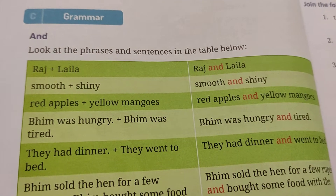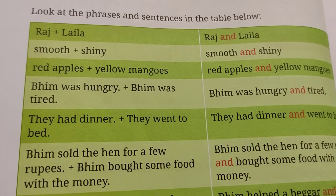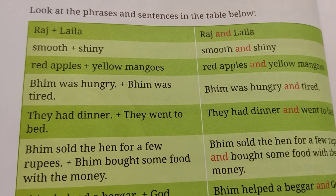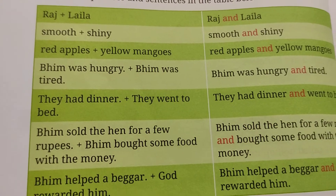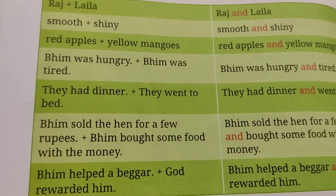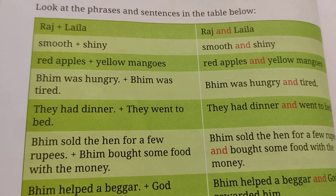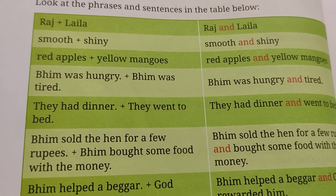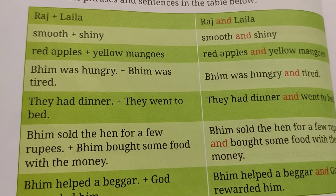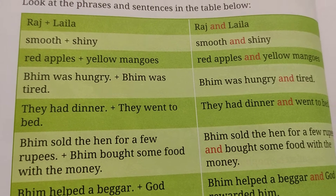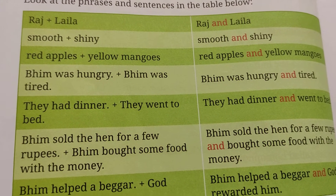So what is in the grammar? Look at the phrases and sentences in the table below. We are given some phrases and sentences. Raj plus Laila becomes Raj and Laila. Smooth plus shiny becomes smooth and shiny. We are given some phrases and if we want to join two words, we join them through the word AND. Like Bhim was hungry plus Bhim was tired — we will say Bhim was hungry and tired. So AND is acting as a joining word; it is helping us join two sentences.